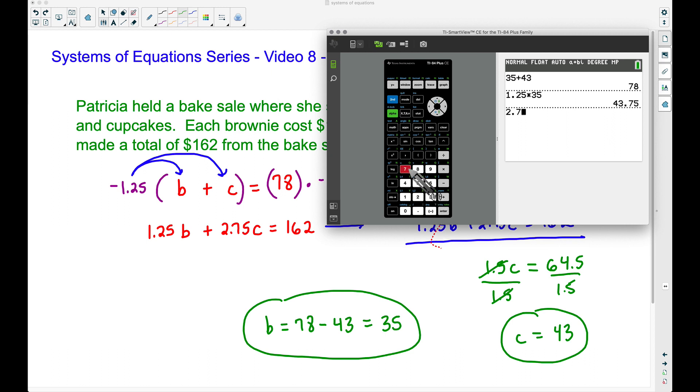Let's take the $2.75 now and let's multiply that by the number of cupcakes she sold, which was 43 cupcakes. She made a total of $118.25 off the cupcakes. And if we add those two numbers together, the $118.25 plus $43.75, let's see what we get.